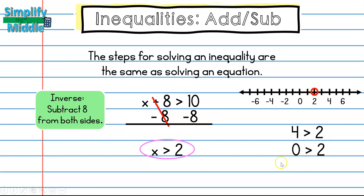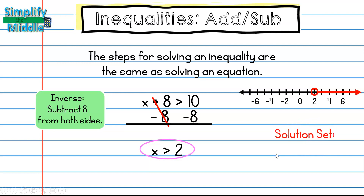Whichever inequality statement is true determines the side I shade. Testing 4 and 0: is 4 greater than 2, or is 0 greater than 2? Since 4 is greater than 2, I shade to the right. Now I can list solutions in a solution set — remember, solution sets use braces. So 3, 4, and 10 are some solutions. The solutions extend past what's visible on the number line — everything to the right of 2.